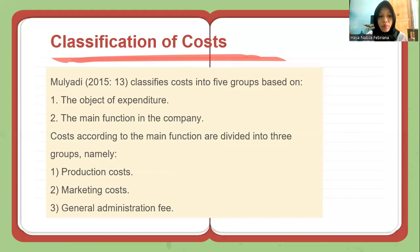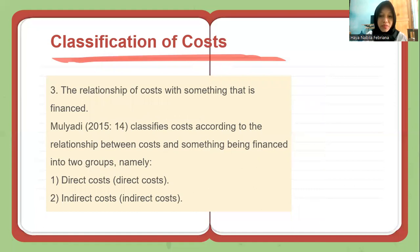The third is the classification of costs. Mulyadi classifies costs into five groups. The first is based on the object of expenditure. The second is according to the main function in the company, which is divided into three groups: production costs, marketing costs, and general administration fees. The third is the relationship of costs with something that is financed, classified into direct costs and indirect costs.